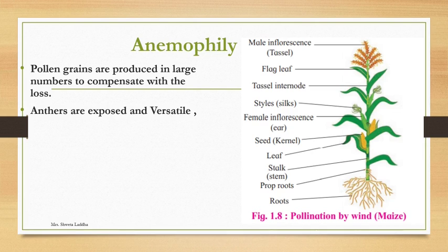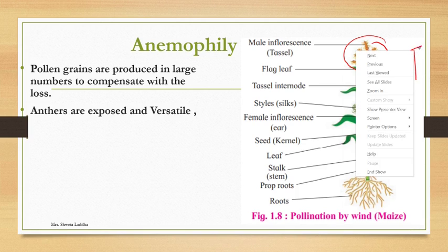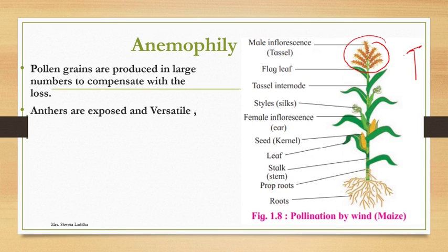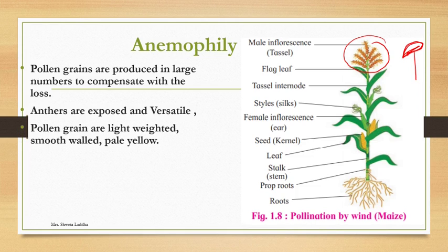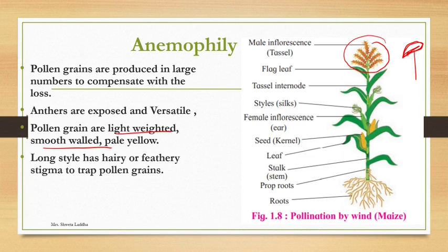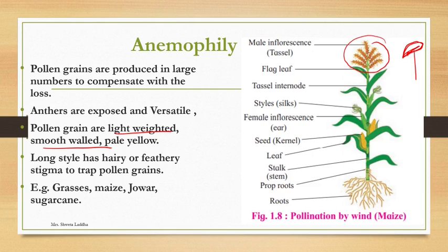The example for anemophily we will take in the lab is maize. Pollen grains are produced in large numbers to compensate for the loss. Anthers are exposed and versatile — attached to the filament by only a single point at the connective — so they swing in the air, helping spread pollen grains. Pollen grains are very lightweight, smooth-walled, and pale yellow. There is a long style with hairy or feathery stigma to trap pollen grains. This occurs in grasses, maize, jowar, and sugarcane. You have to identify the given specimen as anemophilous and write four to five adaptation points.